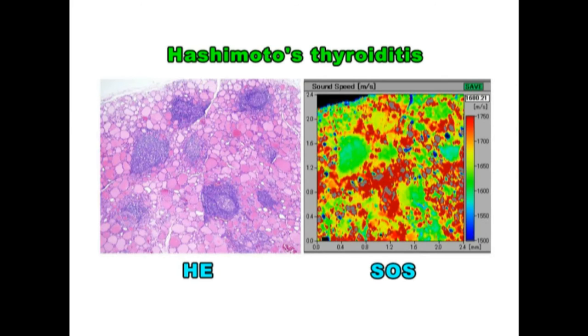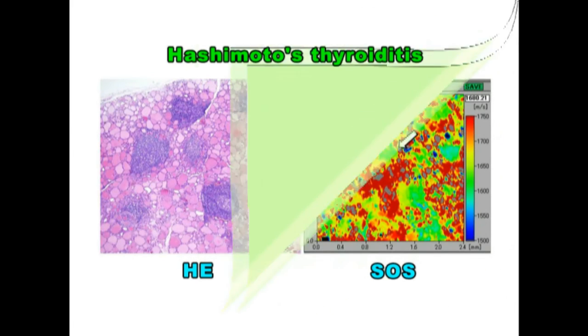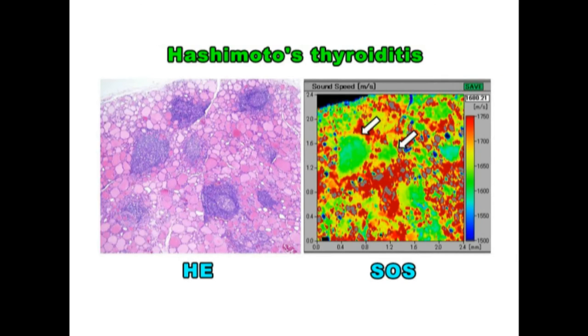This is Hashimoto's thyroiditis image. Several lymph follicles are present among thyroid follicles. Lymph follicles corresponded to green areas or approximately 1600 speed of sound. Dense colloids are red colored with more than 1700 meters per second.